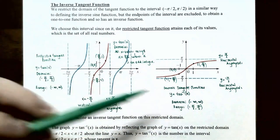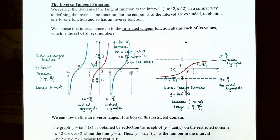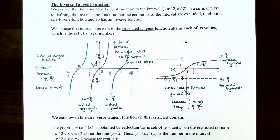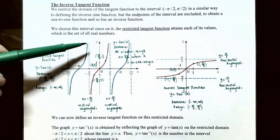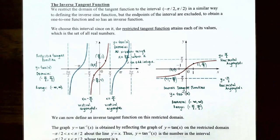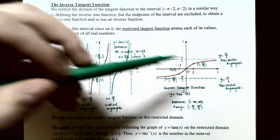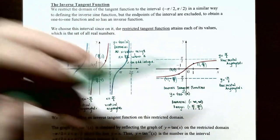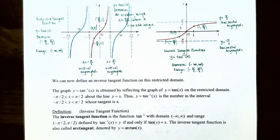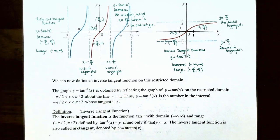The inverse tangent function, y equals inverse tangent of x, has a domain from negative infinity to infinity — the set of all real numbers — and a range from negative pi over 2 to pi over 2, not including the endpoints. The vertical asymptotes at x equals negative pi over 2 and x equals pi over 2 become horizontal asymptotes when you reflect the graph across y equals x, giving horizontal asymptotes at y equals pi over 2 and y equals negative pi over 2.